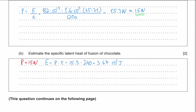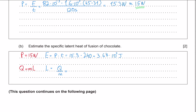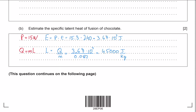We now use the formula from the data booklet: Q = mL, where Q is the energy supplied to change the phase, m is the mass, and L is the specific latent heat of fusion. Rearranging for L gives us L = Q/m. So L = 3.67 × 10³ divided by 0.082 kg, which gives us approximately 4,500 joules per kilogram. This means that if we have 1 kilogram of chocolate at its melting point, we need to supply 4,500 J to convert it from solid to liquid chocolate.